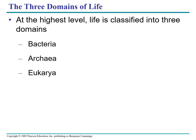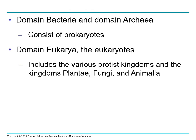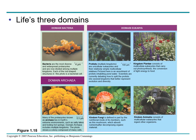The three domains of life: at the highest level, life is classified into domains — bacteria, archaea, and eukarya. Domain bacteria and domain archaea consist of prokaryotes, while domain eukarya consists of eukaryotes. Bacteria are the most diverse and widespread prokaryotes and are now classified into multiple kingdoms — each rod-shaped structure in the photo is a bacterial cell. Domain archaea includes multiple kingdoms. Some prokaryotes known as archaea live in Earth's extreme environments such as salty lakes and boiling hot springs — each round structure in this photo is an archaeal cell.